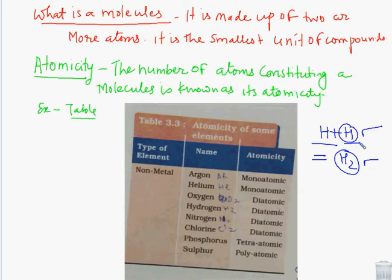Now in a molecule, how many atoms are present? The number of atoms constituting a molecule is known as atomicity. We have a table here. Like if a molecule has a single atom, monoatomicity like argon, helium. Oxygen, as we have written oxygen, oxygen is O2.